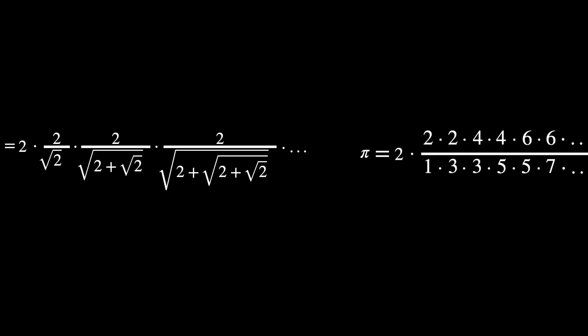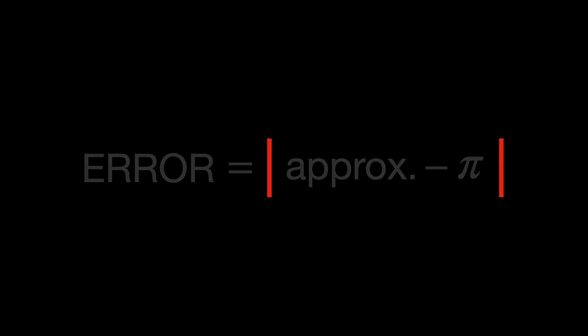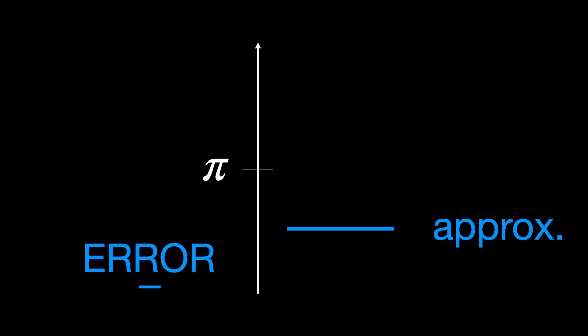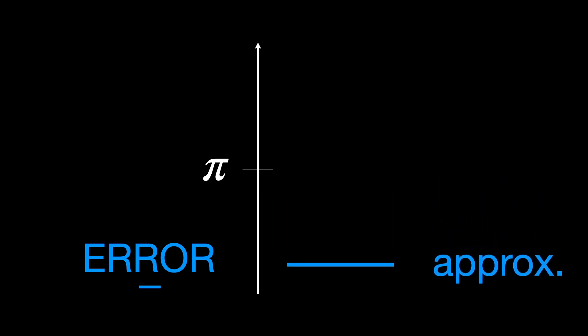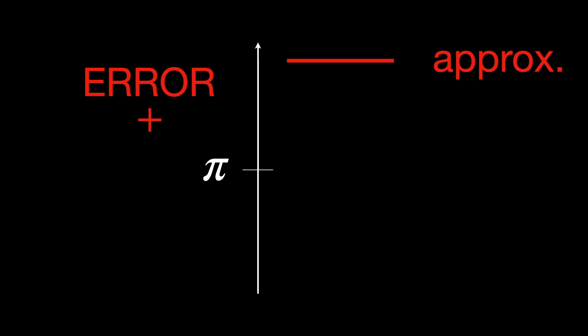In other words, which formula takes fewer iterations to get a satisfactory approximation of π — which one is more computationally efficient? We can compare the two formulas by comparing the error associated with each one. Error is calculated as the absolute value of the difference between the approximation and the real value of π. The absolute value is used because we don't care whether the approximation is lower or higher than the actual value of π — we just want to know how far off we are.